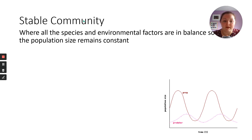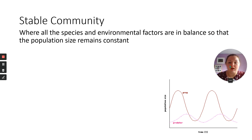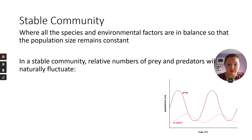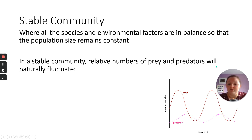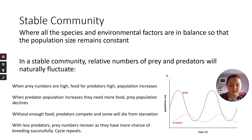A stable community is where all the species and environmental factors are in balance so that population size remains constant. When we say constant, we mean constant over a long period of time — in the shorter term, things will naturally fluctuate. One example of this is prey and predator cycles. There are four main stages in the cycle. When prey numbers are high, there's lots of food for predators, so the predator population can increase because there's plenty of food.